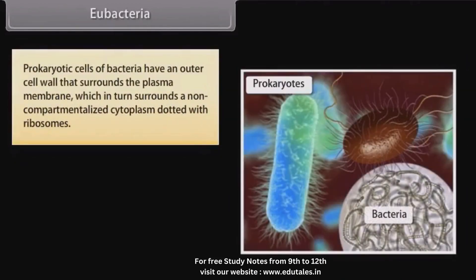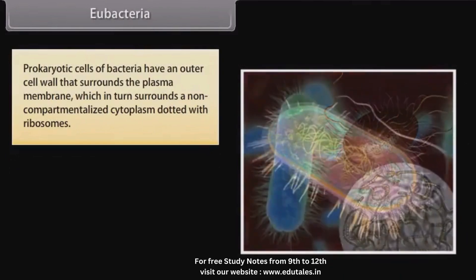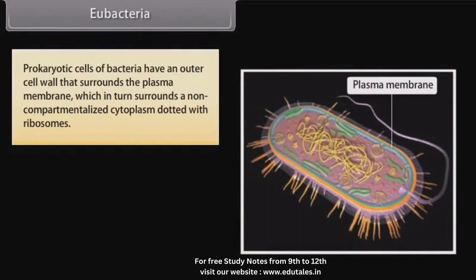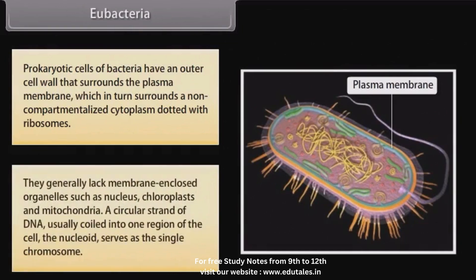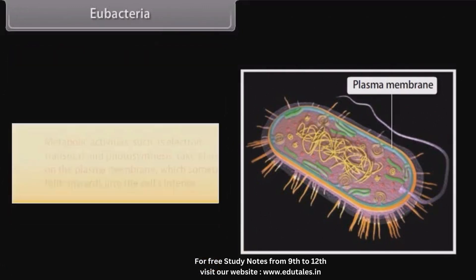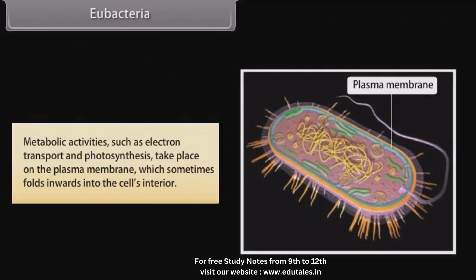Prokaryotic cells of bacteria have an outer cell wall that surrounds the plasma membrane, which in turn surrounds a non-compartmentalized cytoplasm dotted with ribosomes. They generally lack membrane-enclosed organelles such as nucleus, chloroplasts, and mitochondria. A circular strand of DNA, usually coiled into one region of the cell — the nucleoid — serves as the single chromosome. Metabolic activities such as electron transport and photosynthesis take place on the plasma membrane, which sometimes folds inwards into the cell's interior.